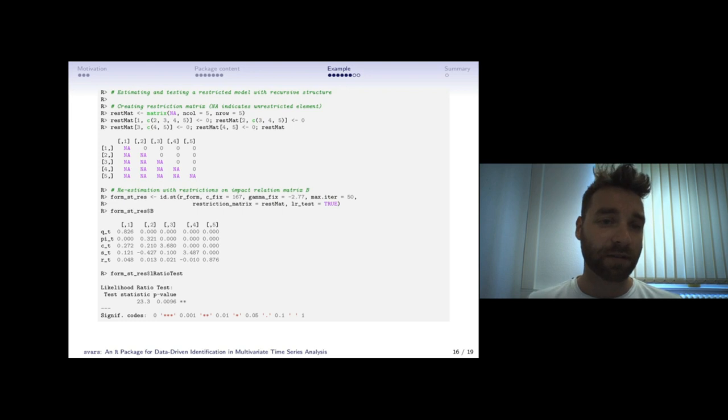We can furthermore test economic restrictions. For instance, that this B matrix, the structural impact correlation matrix, might be a lower triangular matrix. We can test this by specifying a restriction matrix.